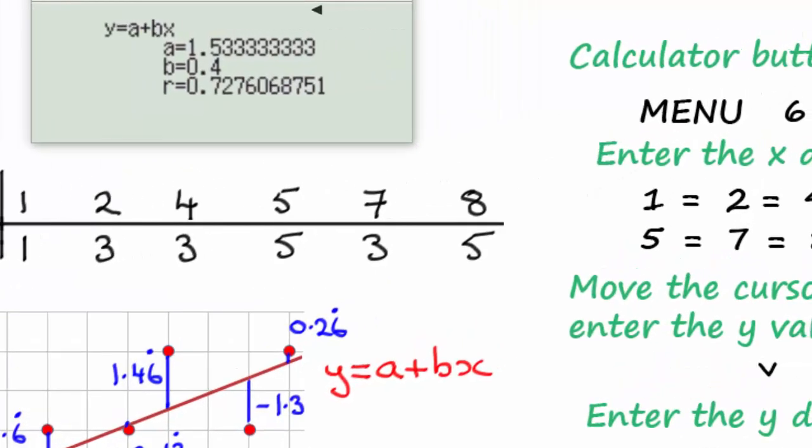We're now given the values of a, b for the least squares regression line for y on x in the form y equals a plus bx. And we've got our value here as a equaling 1.53 recurring and b is equal to 0.4.